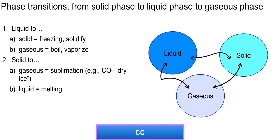Solid to liquid is melting. Gaseous matter makes a phase transition to either of the other two. A gaseous transition to liquid phase is called condensation.